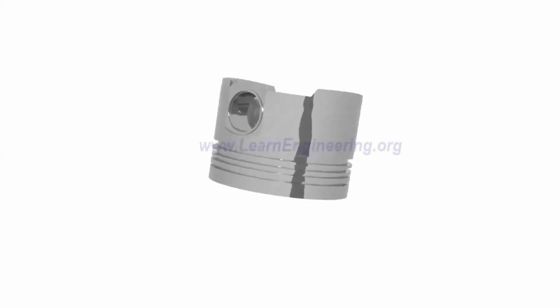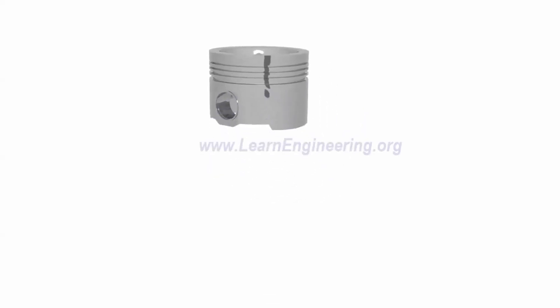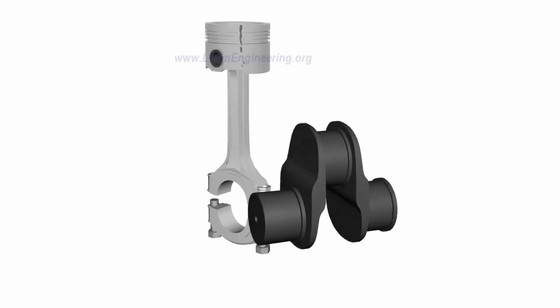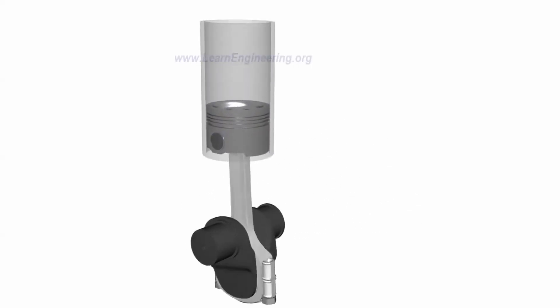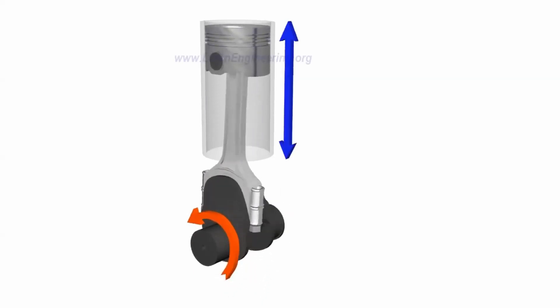Piston, connecting rod, crank, and cylinder form a mechanism called slider crank mechanism. Here, the linear motion of the piston is transformed to a rotary motion at the crank.